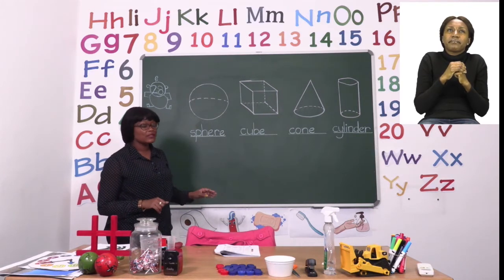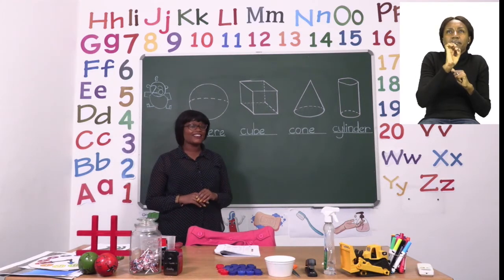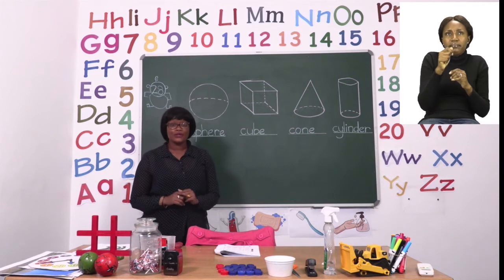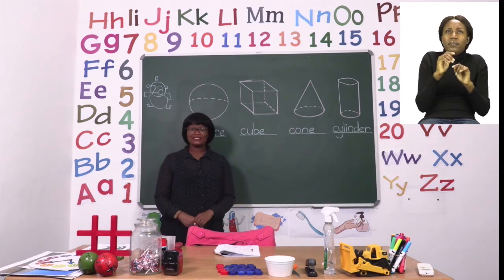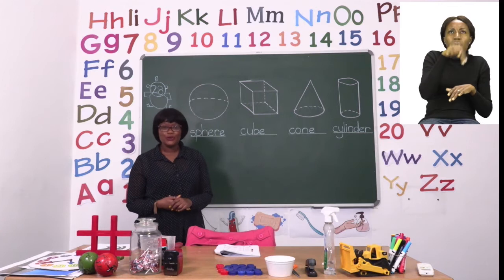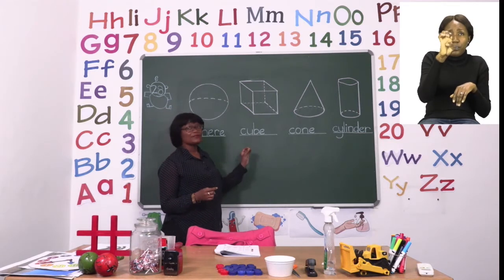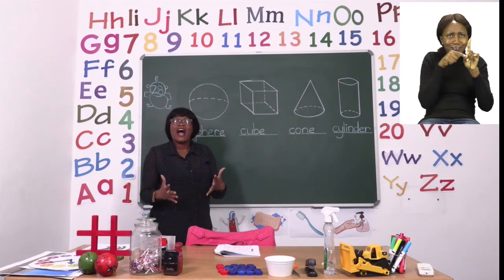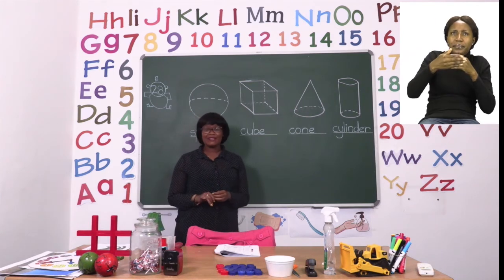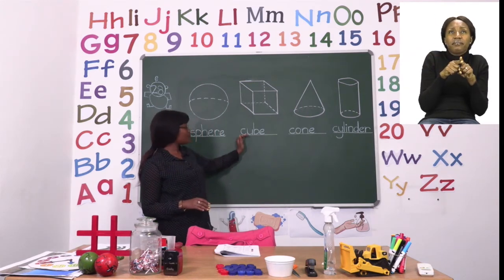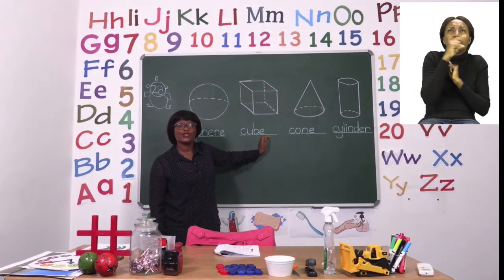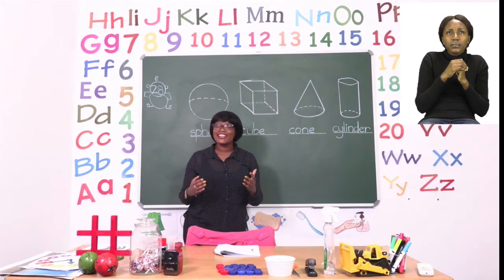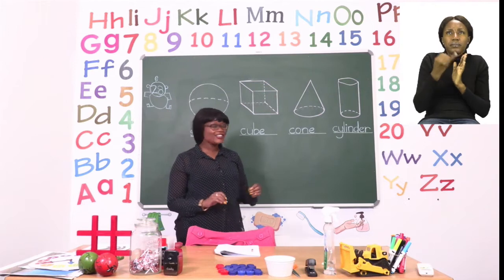It's going to be your job to color the items that look like a sphere in your book. The next one that we have is a cube. A cube is different from a sphere because you can see that it has corners. The broken lines are the ones behind. We have many things that are shaped like a cube — remember we pronounce this as c-c-cube. I'd like you to draw the items in your book that look like a cube.